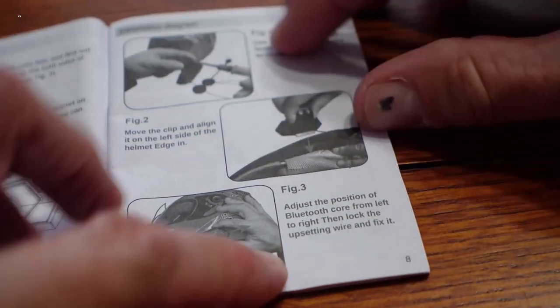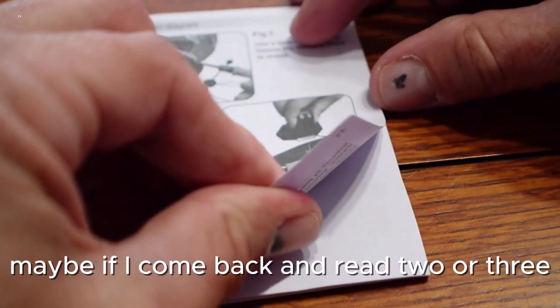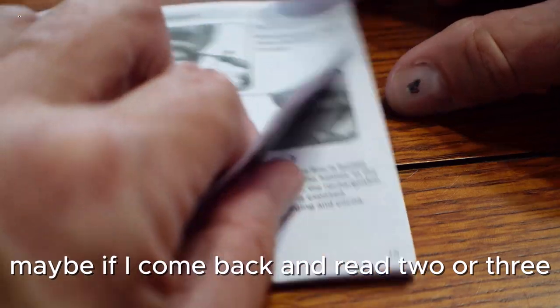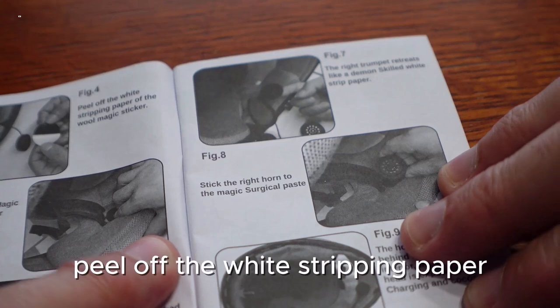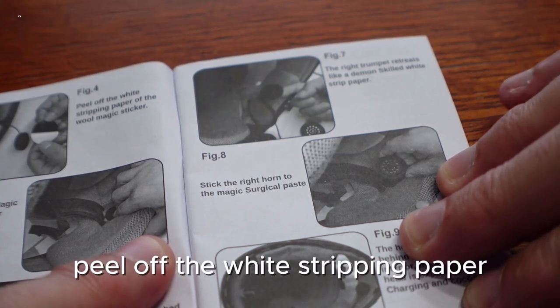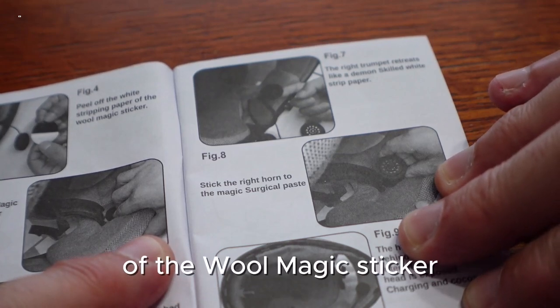All right, we'll figure that out later too. Let's go to the next page. Maybe if I come back and read it two or three or a hundred times, it'll make sense. All right, so let's go to figure four: peel off the white stripping paper of the wool magic sticker.